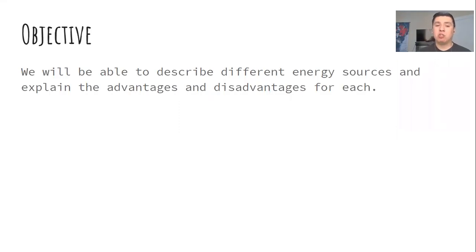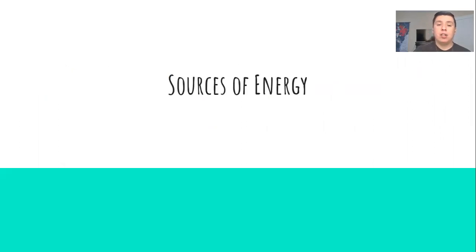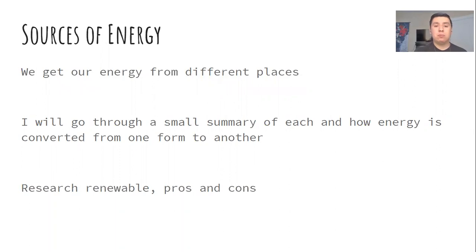We're going to describe different energy sources and explain the advantages and disadvantages for each. That's going to be your assignment. We get our energy from different places depending on how much energy we need and what is available. I'm going to go through a summary of seven different types of energy and how that energy is converted from one form to another. For your assignment, you're going to research whether or not that type of energy is renewable—whether we can reuse it over a long period of time—and the pros and cons of each.